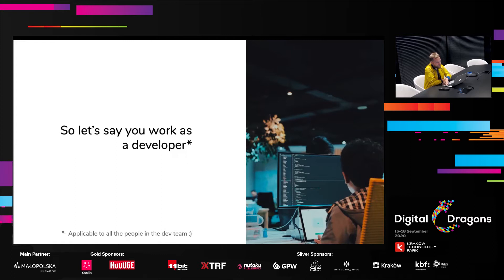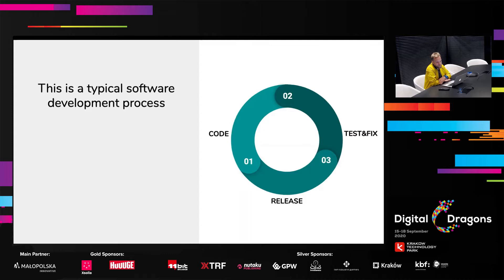This is a quite typical software development process, and the same applies to game development. You start with the initial idea, then you code, then you test and fix, and it's ready to release, then you start all over again. This is a process which is in most cases predictable, because you know what you're going to develop. It's based on fixed timing because gaming studios usually work in sprints, and it's agile because quite soon you know the results of your work.